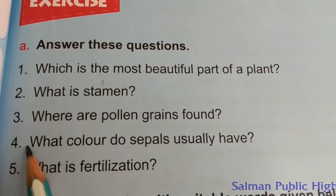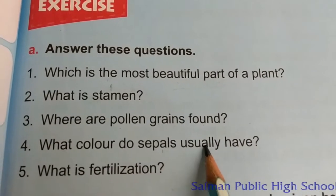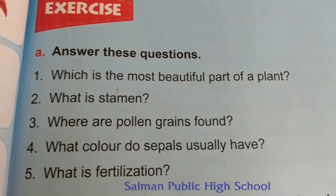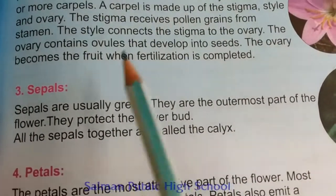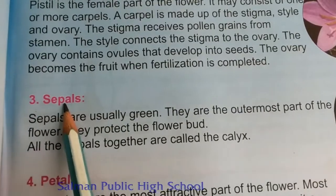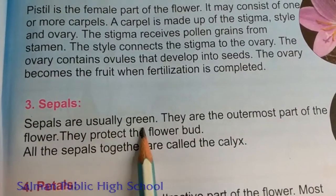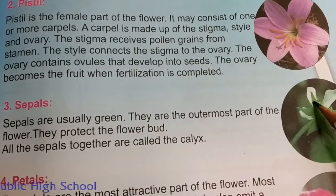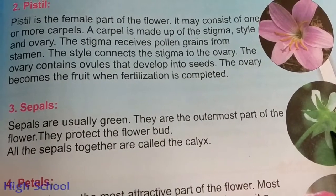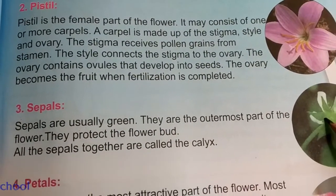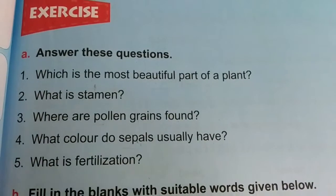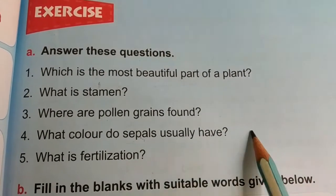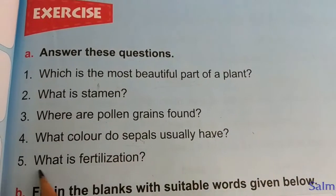Question number 4: what color do sepals usually have? Take out page number 5. The third point is sepals — sepals are usually green. These parts are leaf-like structures, we call them sepals. So the answer to question number 4 is: sepals usually have green color.